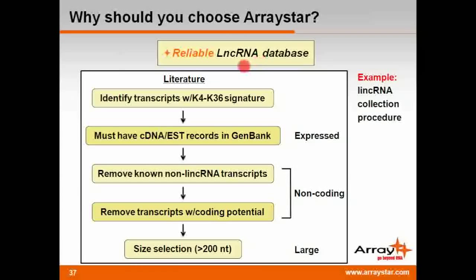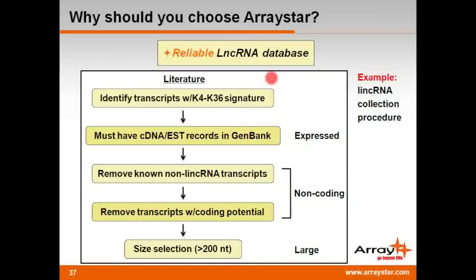In addition to public databases, we also turn to the literature to aid in construction of our LNCRNA databases. We begin by identifying transcripts with the K4-K36 chromatin signature shown by John Rinn's group, require that these transcripts have cDNA or EST records in GenBank so that they're expressed, then apply the same narrowing-down steps. The take-home message is that we end up with a very comprehensive and reliable LNCRNA database. All these strict requirements ensure very high-quality databases for the design of our arrays.